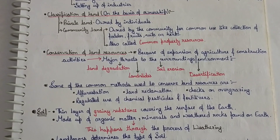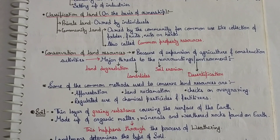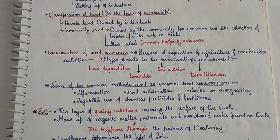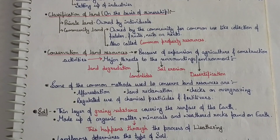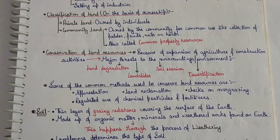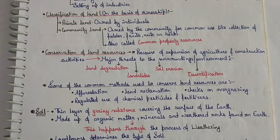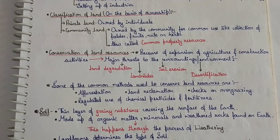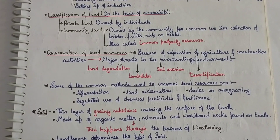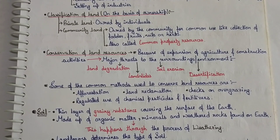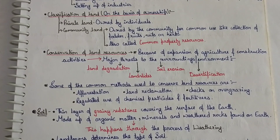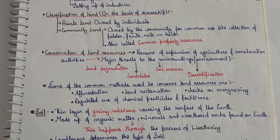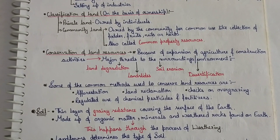Landforms help determine the types of soil. Humus makes the soil more fertile along with the right mix of minerals. Humus is an organic component of soil formed by the decomposition of plant and animal remains.